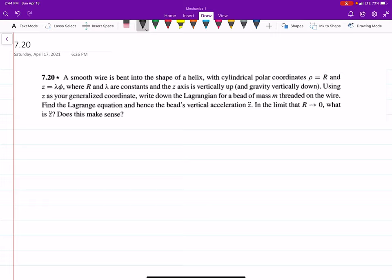So this is 7.20 out of Taylor's Mechanics book. It says a smooth wire is bent around into the shape of a helix with cylindrical polar coordinates rho equals R.